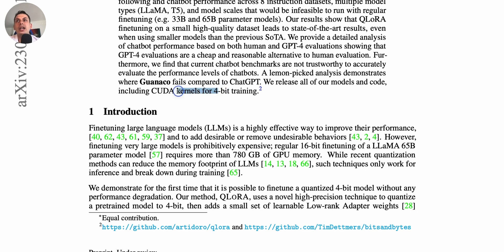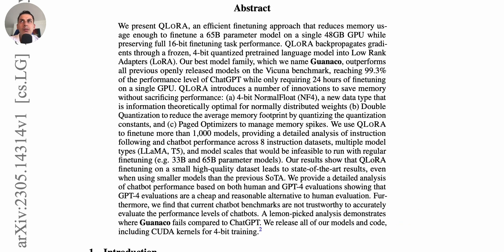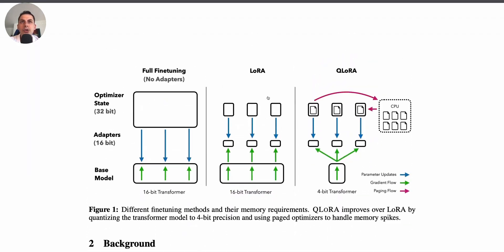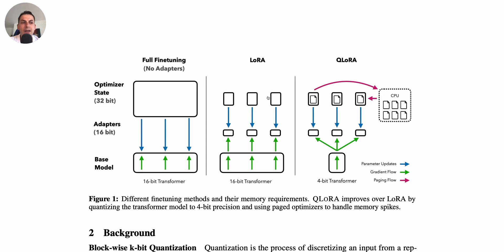There are also released CUDA kernels for 4-bit training of models. But let's talk about how QLORA works in practice. If you want to fine-tune an LLM such as LAMA, FALCON, ALPACA, or Vicuna, the standard way is to fine-tune the whole LLM. You take the LLM, you might use 16 or 32-bit precision, and you show your dataset — for example, for instruction fine-tuning.